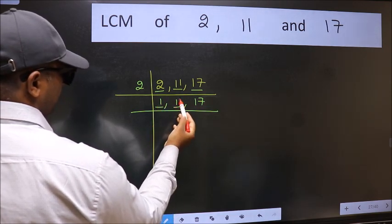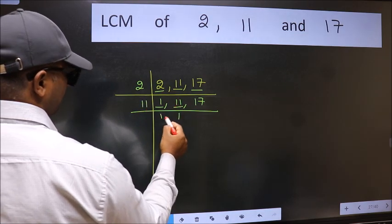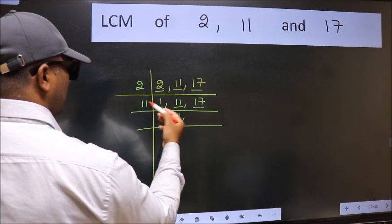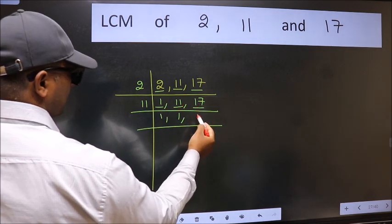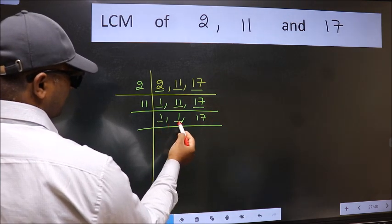Focus on the next number 11. 11 is a prime number, so 11 wants 11. The other number 17 not divisible by 11, so we write it down as it is. Now we got 1 here and here.